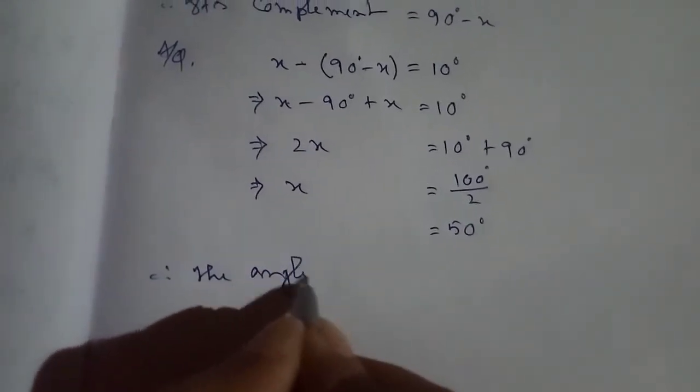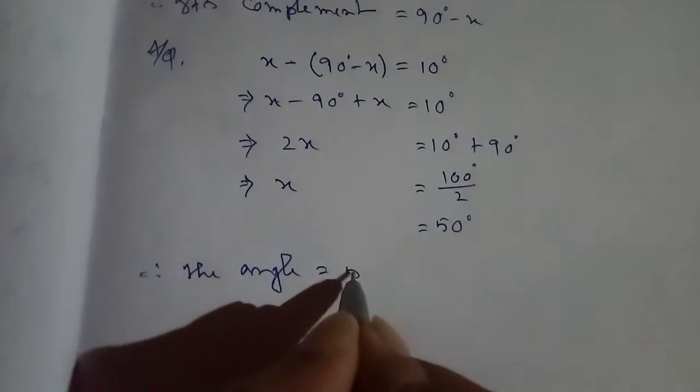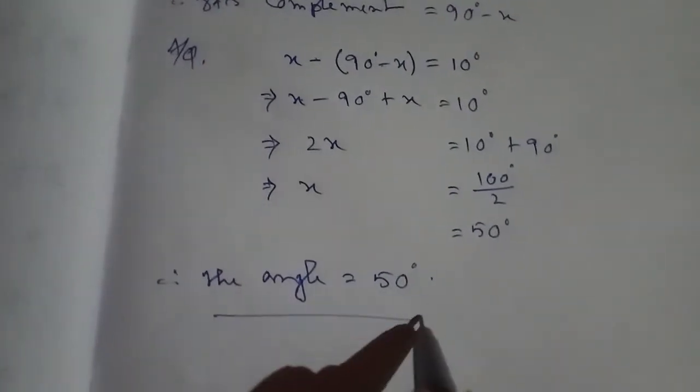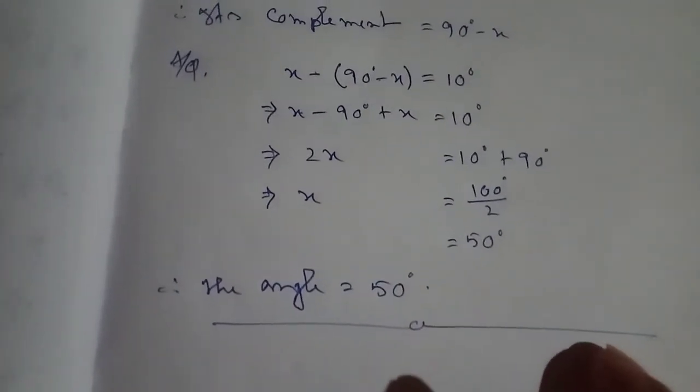Therefore, the angle is equal to 50 degrees. Let us take one more question — question number 6: an angle is 14 degrees more than its complement. What is its measure?